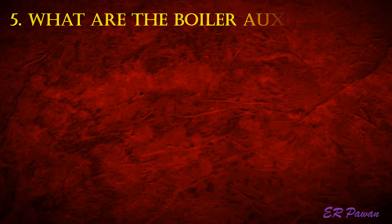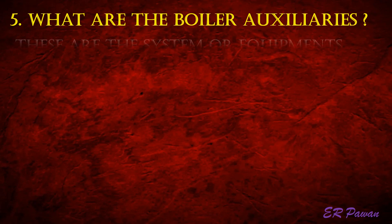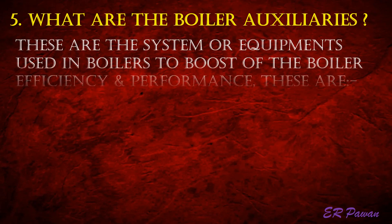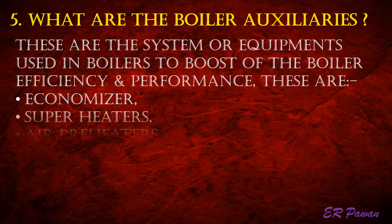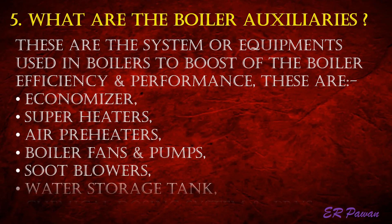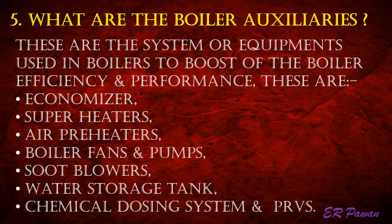Question 5: What are the boiler auxiliaries? These are the systems or equipment used in boilers to boost boiler efficiency and performance. These are: 1. Economizer, 2. Super heaters, 3. Air preheaters, 4. Boiler fans and pumps, 5. Soot blowers, 6. Water storage tank, 7. Chemical dosing system, and 8. PRVs.